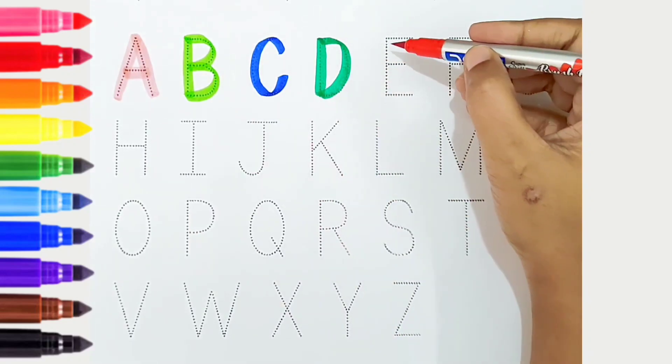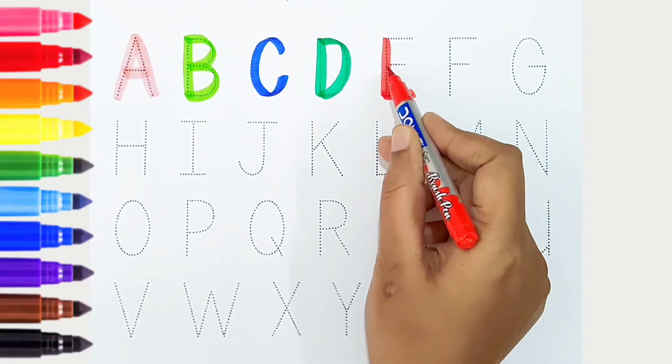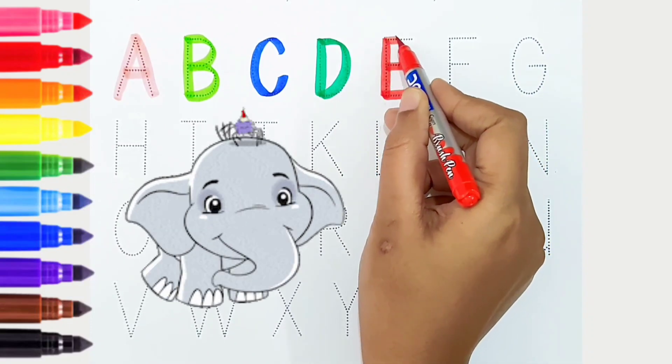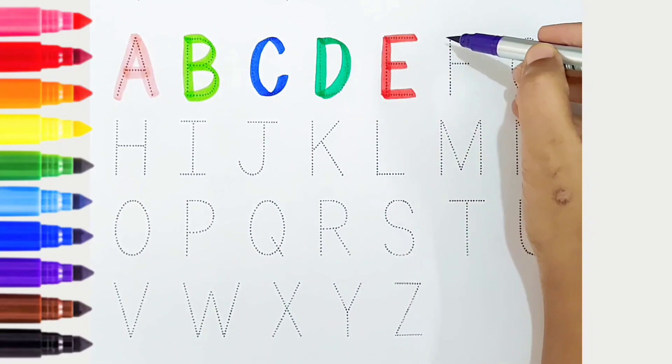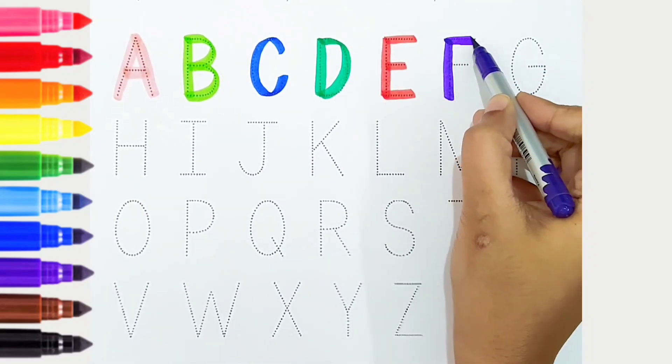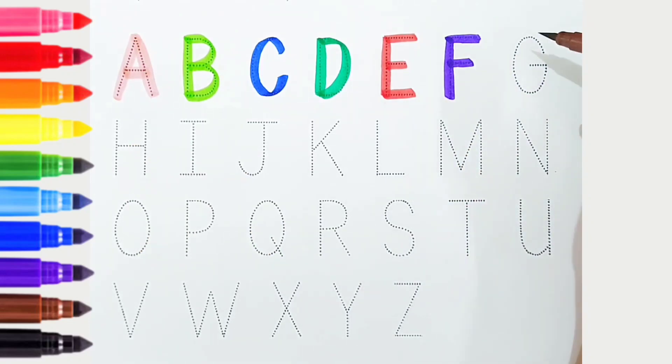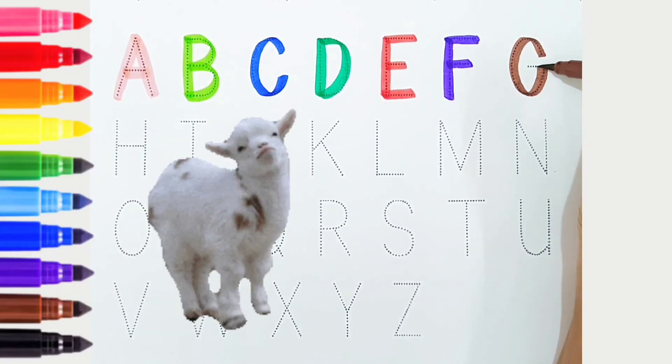E, red color, is for elephant. F, violet color, is for fish. G, brown color, is for goat.